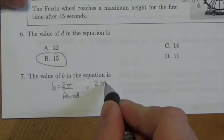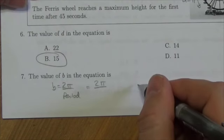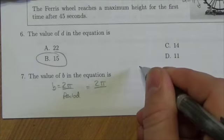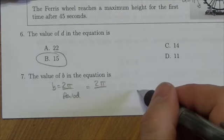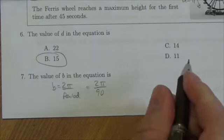I use 2π here because I'm in radians. Now, 2π over the period - it takes 45 seconds to go from the bottom to the top. It's going to take another 45 seconds to go from the top down to the bottom. So altogether, that's 90 seconds.